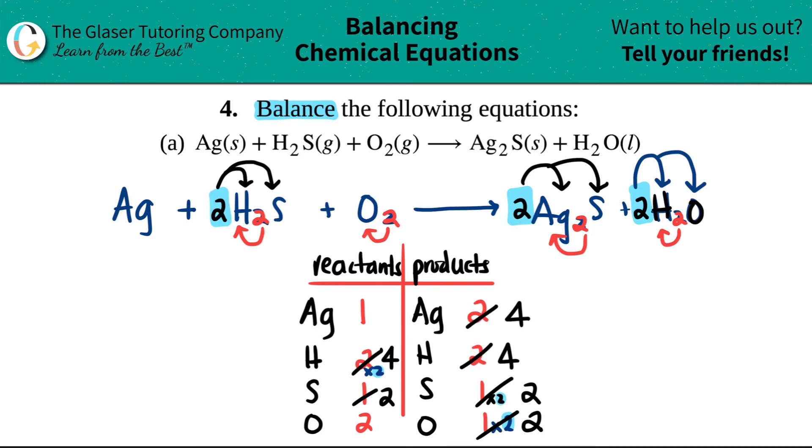And now it looks like the silvers are still unbalanced, but it looks like we're getting closer. I have a four on one side, I have a one on the other side. One times four will get me four, right? And that number goes here. And this will cancel out. I get four. And if I look across, four, four, so that's balanced.